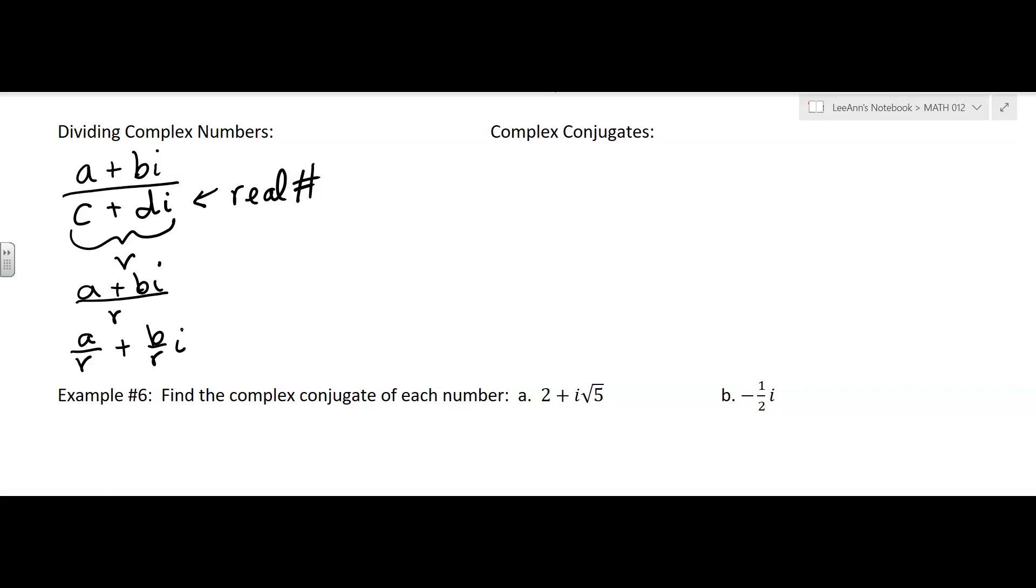What we have to do is get that denominator to be a real number. And the way we do that is by multiplying by what's called the complex conjugate. So if you have a plus bi over c plus di, you're going to multiply the denominator by the complex conjugate. And that's going to be c minus di.